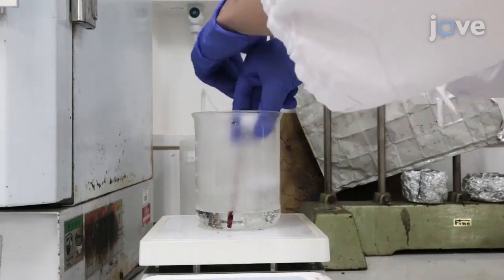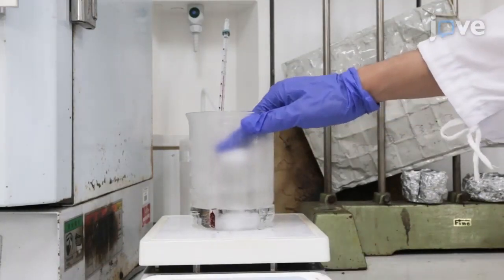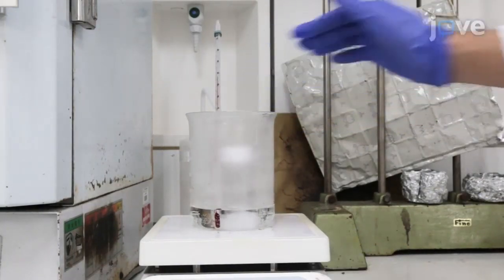Heat the vial to 70 degrees Celsius in a water bath under vigorous stirring, and continue to stir for 6 hours after reaching 70 degrees Celsius.